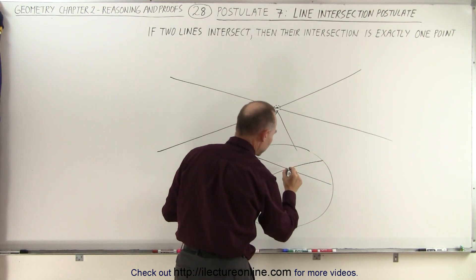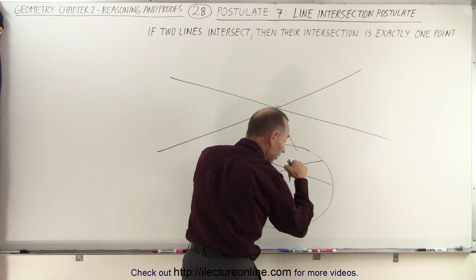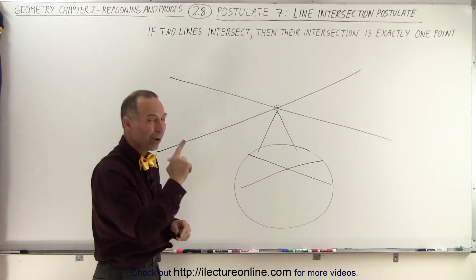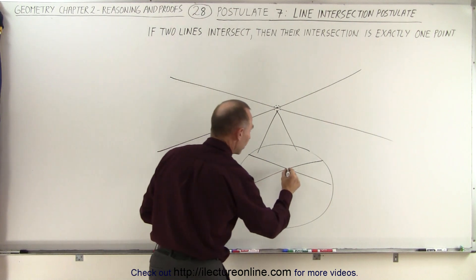It doesn't matter that if we keep zeroing in and zeroing in where the two lines cross, there's just one point, one singular point, where the two lines cross.